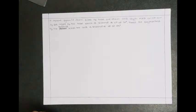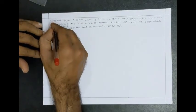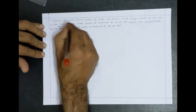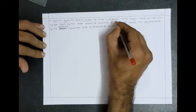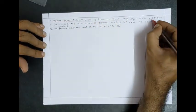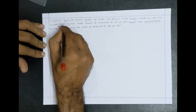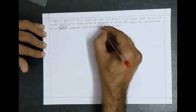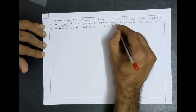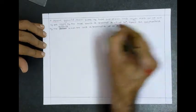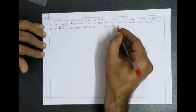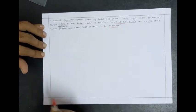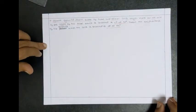Hello dear students. Today we're going to discuss a problem on a square pyramid. The given problem is: a square pyramid with 35mm sides of base and 65mm axis length rests on the HP on one of its edges. The resting base is inclined to the VP at 30 degrees, and we need to draw the projections when the axis is inclined to the HP at 45 degrees.